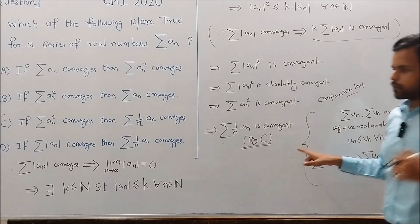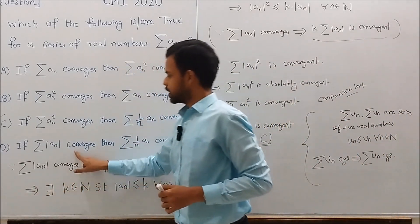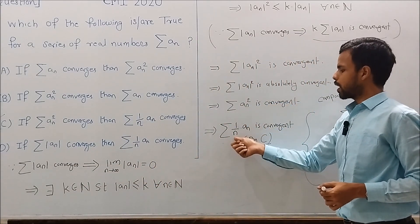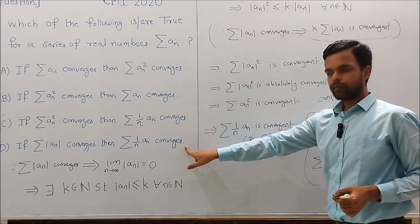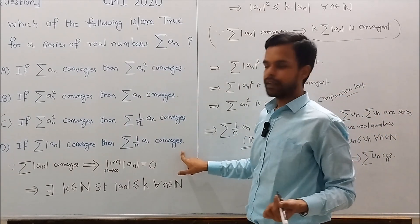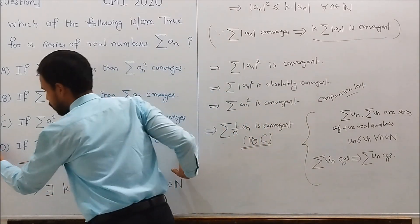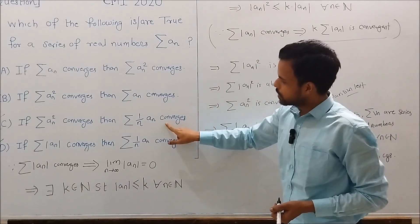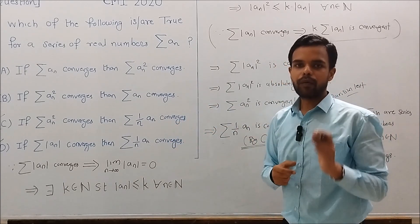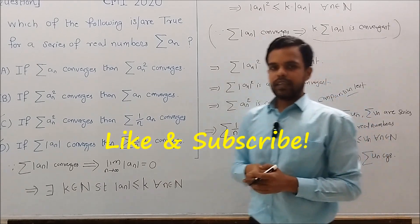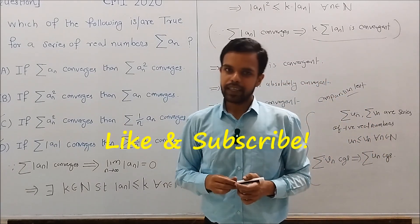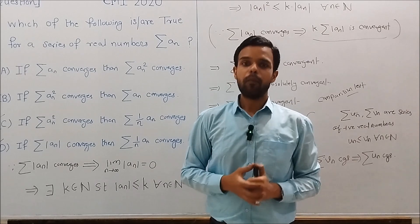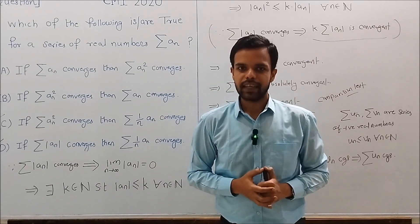We started with series mod An converging and proved that series An over n is convergent, which proves Statement D. So the answer to this question is that Statements C and D are true. If you found this video interesting and helpful, please like, share, and subscribe to our YouTube channel. This will motivate us to provide more quality content on mathematics. Thank you for watching.